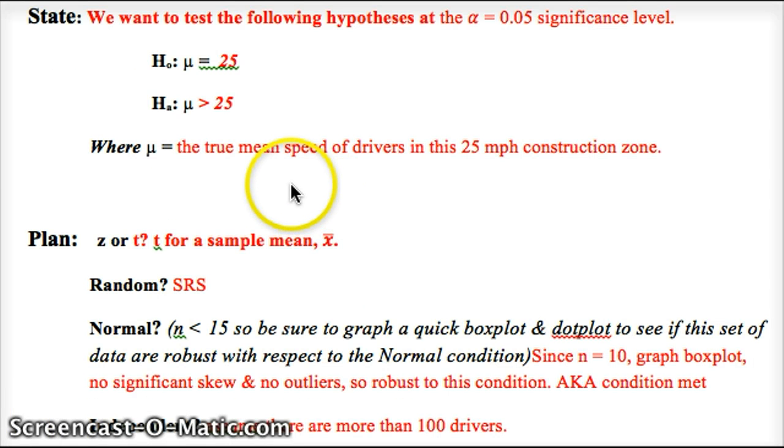So the proposed parameter is that people are actually following the speed limit, and the true average is 25 miles per hour. We state that we're testing it at the alpha equals 0.05 significance level, meaning that our test statistic, if its plausibility is less than 5%, we can reject the null hypothesis and assume the alternative.